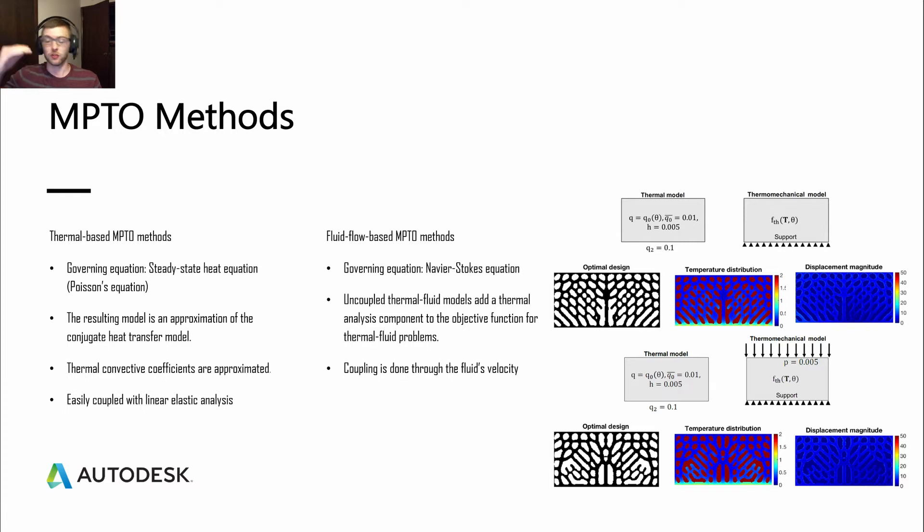We can see an example on the right-hand side here. On the upper side, we have heat exchanger design with no mechanical load. We just have a flux over the design domain and a sink on the bottom. You can see the resulting design from that. On the bottom side, we have the same problem set up, but this time we prescribe a pressure on the top for mechanical loading. You can see how the design changes from there.